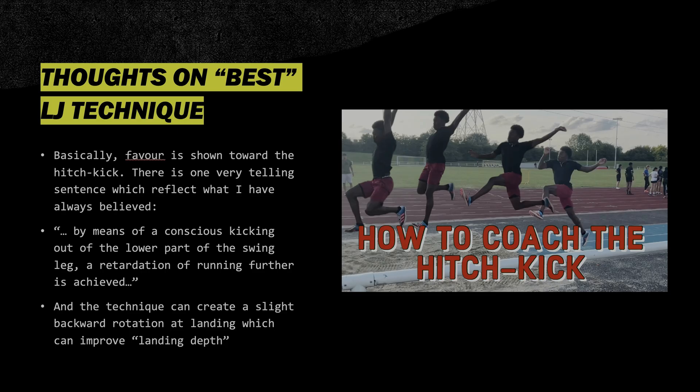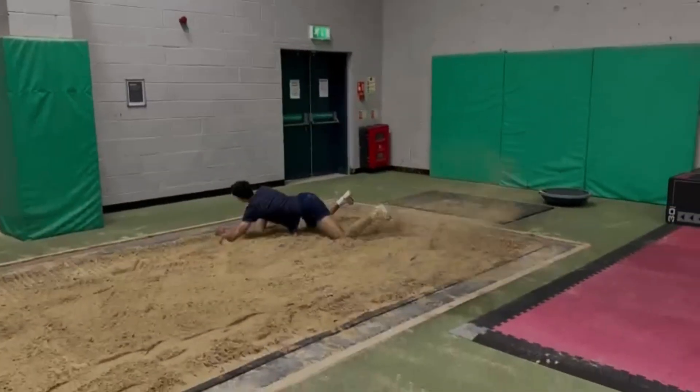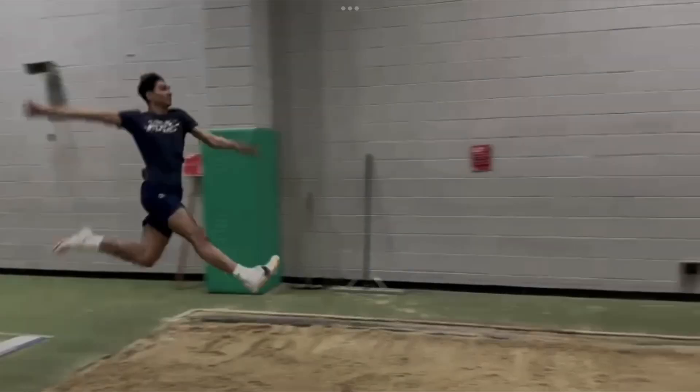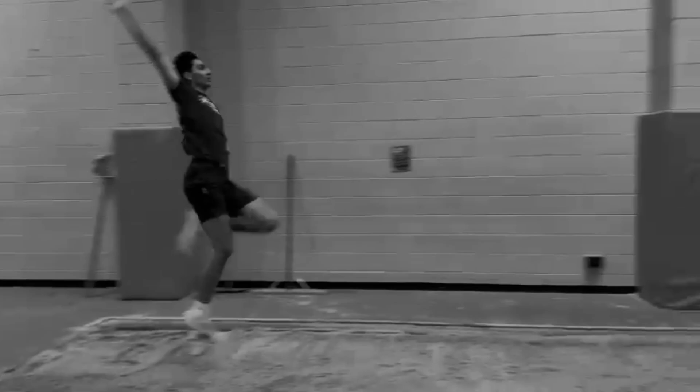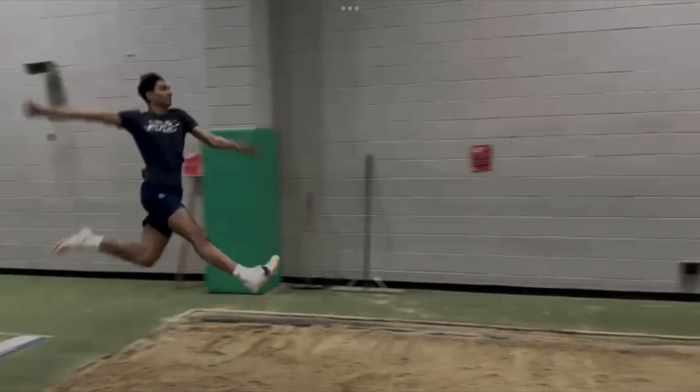What about technique? The Germans indicated favour toward the hitch kick, and there is one telling sentence which I believe reflects what I've always believed. By means of kicking out the lower part of the swing leg, a retardation of running further is achieved. Basically, by extending the lower leg after takeoff and then pulling back into the hitch kick, you're going to slow down the movement in the air, give the jump greater control, and push the landing depth further.